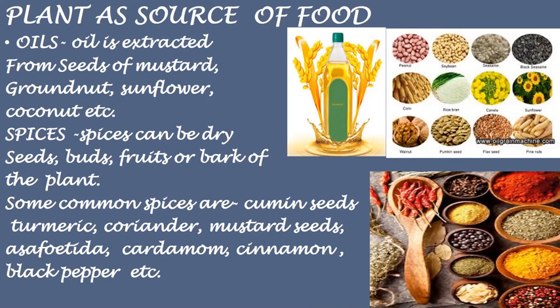Next are spices. Spices can be dry seeds, buds, fruits, or bark of a plant. Some common spices are cumin seeds (jeera), turmeric (haldi), coriander (dhaniya), mustard seeds (sarson), asafoetida (hing), cardamom (elaichi), cinnamon (dalchini), and black pepper (kali mirch). The spices used for cooking add flavor to the food. They are mostly obtained from different parts of the plant and most of them have medicinal properties.